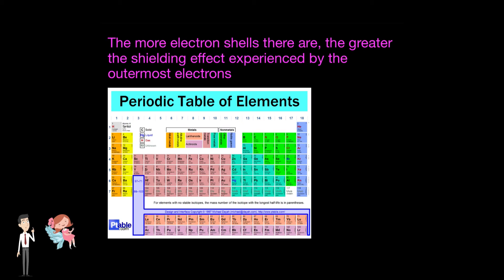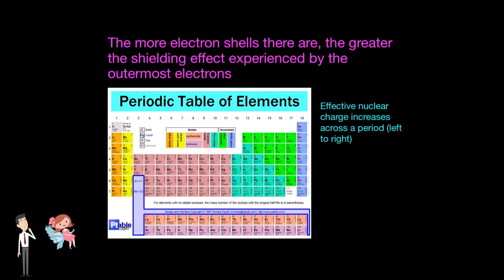Now we'll look at the trends of the effective nuclear charge. If we go across the period from left to right, protons are being added, which makes nuclear charge increase. As protons are added, electrons are added as well, but these electrons are being added into the same energy level. Thus, there is no newfound shielding. Therefore, just like nuclear charge, effective nuclear charge also increases across a period. However, contrasting to nuclear charge, effective nuclear charge decreases down a group.